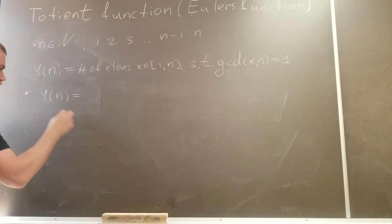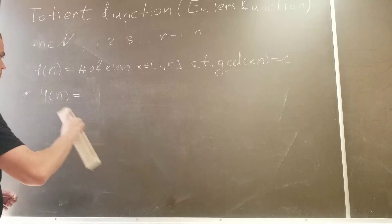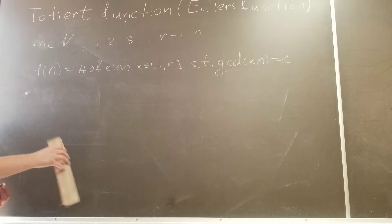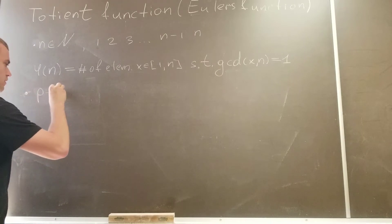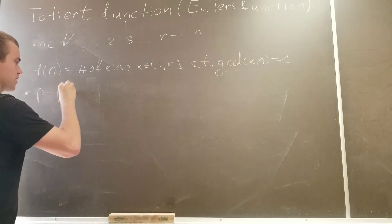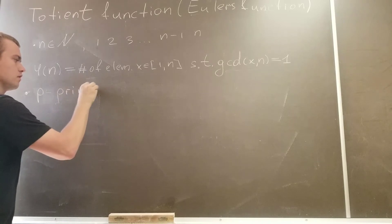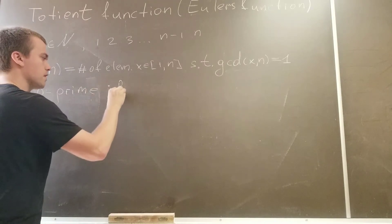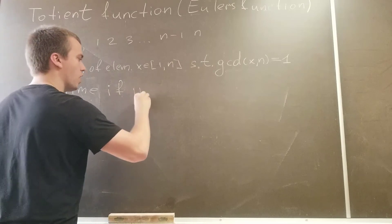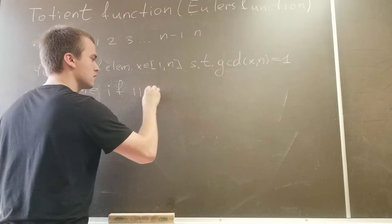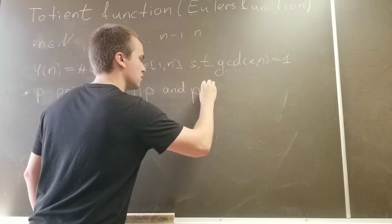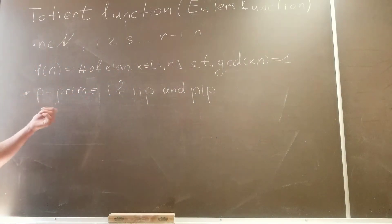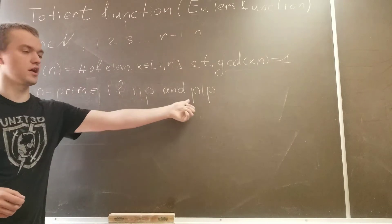I want to choose some n for which phi is going to be calculated pretty easily, and one of the most clearest examples is to take prime numbers. So let's first give a definition of prime number. We can say that a natural number p is a prime number if the only divisors of p are 1 and p itself.